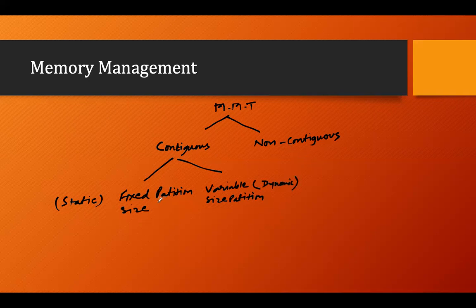In fixed size partition, the memory is partitioned into fixed sizes. In variable size partition, the memory is not pre-partitioned — instead, the partition is done based on the process size.